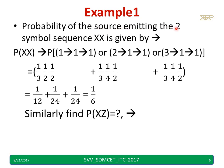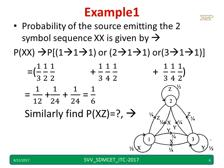The probability of the source emitting the two-symbol sequence xx can be found as follows. To get xx, there are three paths: state 1 to 1 then 1 to 1; state 2 to 1 then 1 to 1; and state 3 to 1 then 1 to 1. So the three options are: path 1→1→1, path 2→1→1, and path 3→1→1.